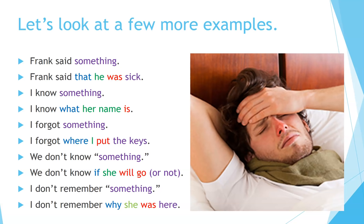'We don't know something.' 'We don't know if she will go or not.' Extra word: 'if.' 'She' is the subject. 'Will go' is the verb. 'I don't remember something.' 'I don't remember why she was here.' The extra word is 'why' — it signals the beginning of the noun clause. 'She' is the subject. 'Was' is the verb. 'Here' is just an adverb that completes the noun clause.